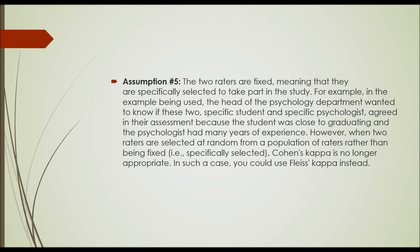The fifth and last assumption is that the two raters are fixed, meaning they are specifically selected to take part in the study. For example, the head of the psychology department wanted to know if a specific student and specific psychologist agreed in their assessment because the student was close to graduating and the psychologist had many years of experience. However, when two raters are selected at random from a population, Cohen's Kappa is no longer appropriate, and in such cases you can use Fleiss' Kappa instead — though it's not possible to perform Fleiss' Kappa in SPSS unless you know the syntax for it.